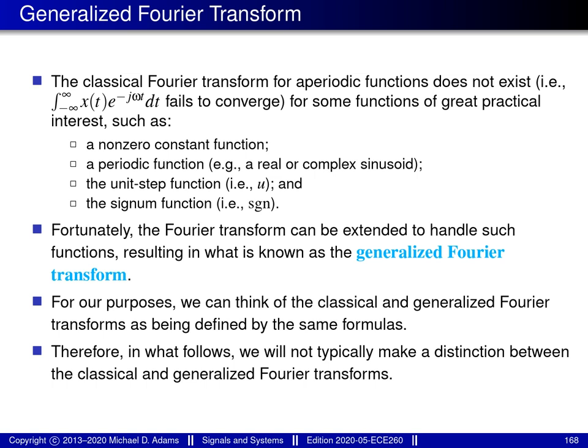The classical Fourier transform for aperiodic functions, as introduced on the previous slide, doesn't exist for many functions of practical interest. There are many functions x for which this integral will fail to converge. Some examples of functions for which this integral fails to converge include non-zero constant functions, periodic functions such as real or complex sinusoids, the unit step function, the signum function, and so on. Fortunately, the Fourier transform can be extended to handle functions like these, resulting in what's known as the generalized Fourier transform. Essentially, the generalized Fourier transform extends the classical Fourier transform so as to allow functions and their Fourier transforms to have formulas that include generalized functions, such as the delta function.